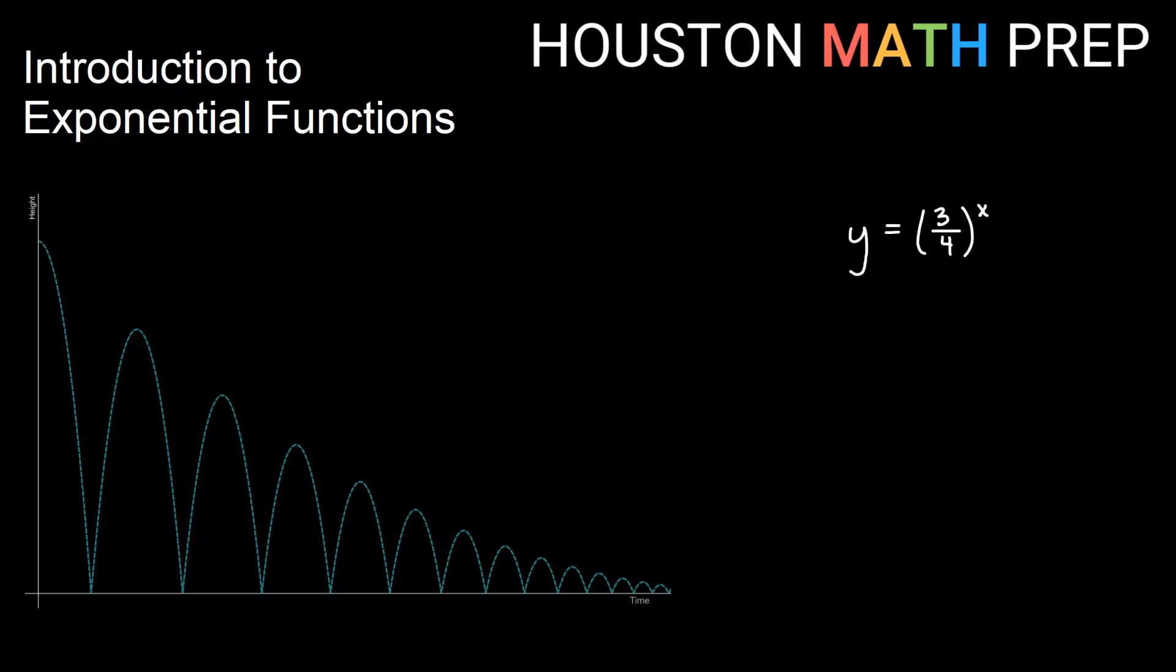This idea where the height of each bounce is three-fourths as much as the one before it, so here I have y equals three-fourths all to the power x. If we imagine x is the number of bounces that have occurred already, so at the start it hasn't bounced yet, so we have y equals three-fourths to the zero power. Remember anything to the zero is going to be one. And then after one bounce, it bounces three-fourths as high, so that's three-fourths to the one and that just gives us three-fourths. Anything to the one is itself.